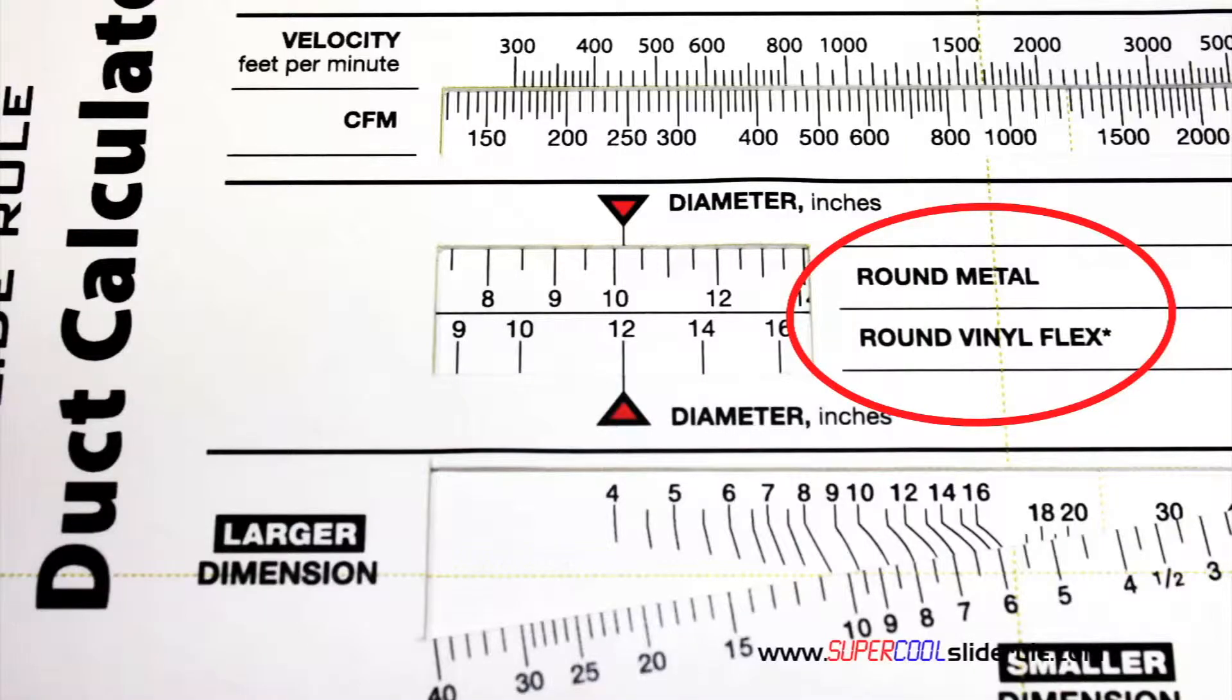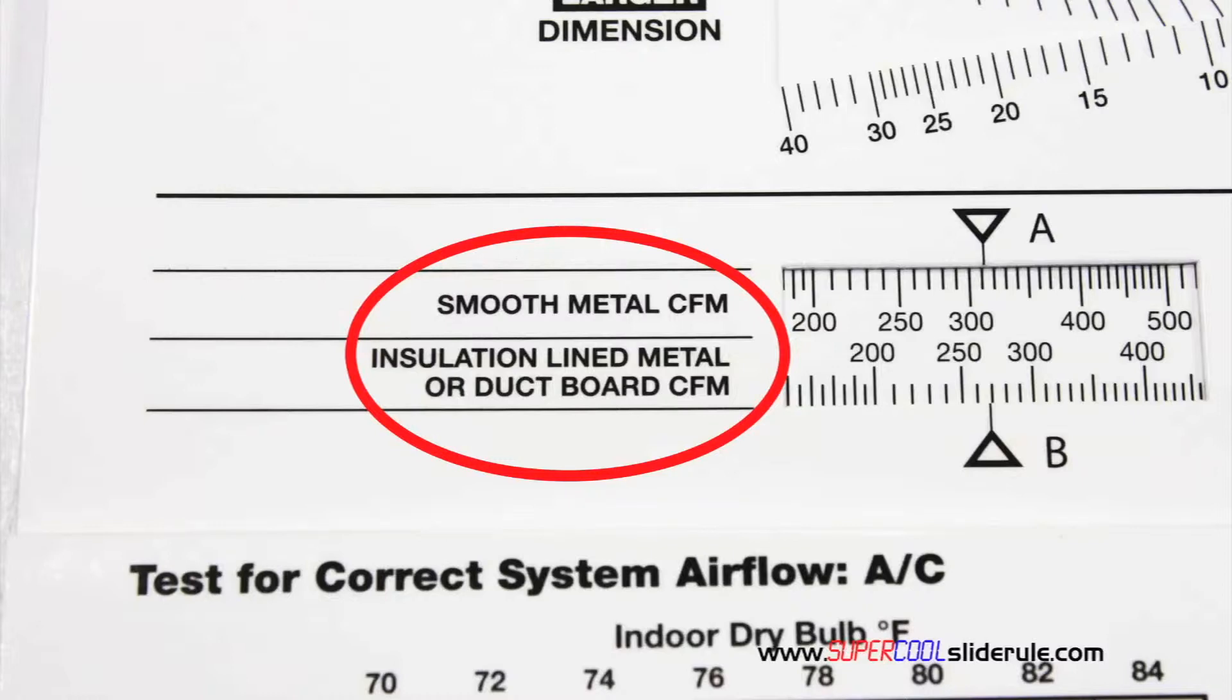It performs sizing of both metal and flexible duct. It has the only direct reading conversion from smooth metal to insulation lined metal we've ever seen. The majority of technicians have never been taught that if the insulation is on the inside of the ductwork, you cannot size it with a regular duct calculator.